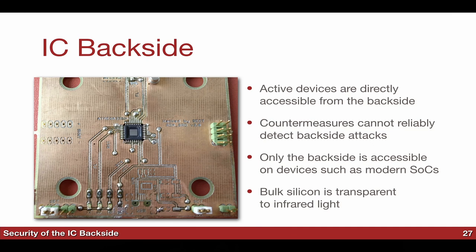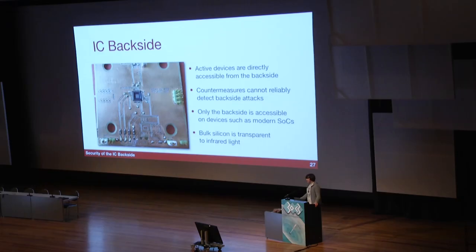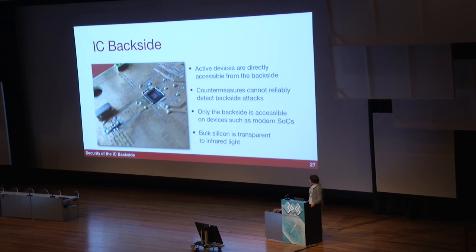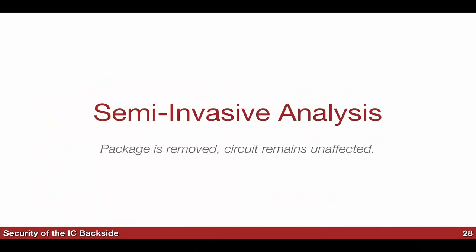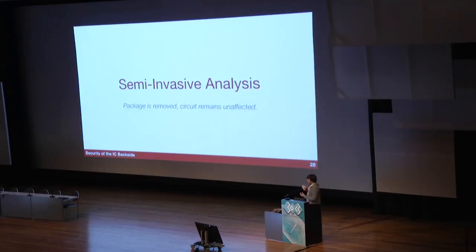Colin sagt, ich sollte diese Bilder nicht zeigen. Hier haben wir den Chip, der geschliffen wurde — die Beschriftung ist auf der anderen Seite. Den wir mit dieser schönen Poliermaschine geschliffen haben. Diese Maschine ist ziemlich teuer zu betreiben. Es ist ein selbstbestelltes Circuitboard und der Chip ist natürlich auf dem Kopf — man kann sich sogar darin spiegeln. Jetzt haben wir den Chip poliert und sind bei 30 Mikrometer Dicke.